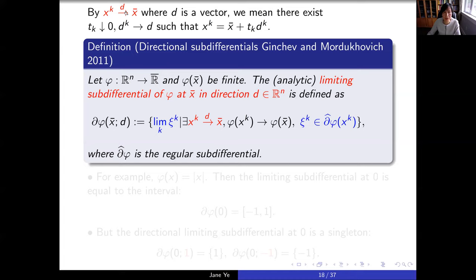If the limiting subdifferential is a set and we can replace it by a smaller set, the resulting Fritz John condition is sharper and the constraint qualification is weaker. We will use the directional limiting subdifferential. Given a direction vector d, in the definition of the limiting subdifferential, instead of letting x_k converge to x-bar arbitrarily, we consider x_k going to x-bar in the direction d.